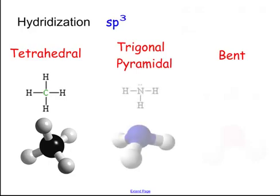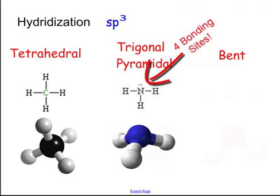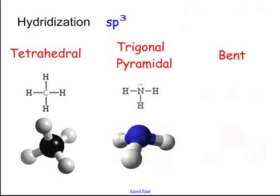Here is our trigonal pyramidal. That's like ammonia, NH3. And look at what ammonia has on them. The nitrogen has an unshared pair, one unshared pair. It still has four bonding sites, four bonding sites. But, so it's the exact same hybridization. It's still SP³. But it's a different shape and a different bond angle because of that unshared pair. And that creates what we call a triangle pyramid, 107 degrees.